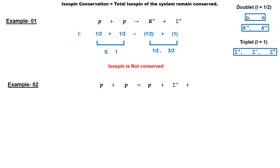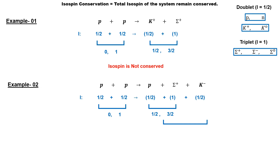In the next example, two protons decay into a proton, a sigma baryon, and a kaon. Since the proton and kaon are members of the doublet group, they have isospin 1/2, while the sigma is a member of the triplet group with isospin 1. The possible total isospin of the two parent particles is 0 or 1. For the daughter particles, the total isospin of the proton and sigma may be 1/2 or 3/2. Adding the vector contribution of the kaon's isospin, the total isospin of the daughter particles may be 0, 1, or 2. Since the total isospin of the parent particles matches a possible total isospin of the daughter particles, isospin is conserved in this reaction.